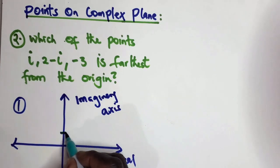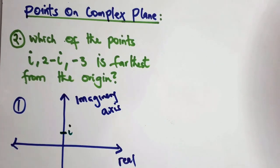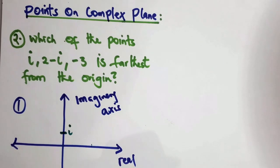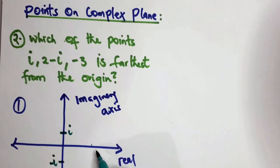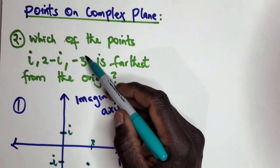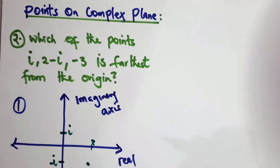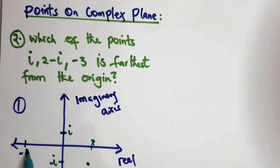i is right here. Then we have two units on the real axis and negative i unit on the imaginary axis, so negative i, then two over here. The point is right there. Now we are told minus three is on the real axis, so it should be somewhere over here.